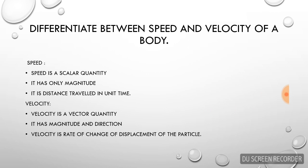Speed and velocity — what is the difference? Speed is a scalar quantity. For a scalar quantity, only magnitude is there, no direction. Speed is defined as distance traveled in unit time. Velocity is a vector quantity, so it has both magnitude and direction. Velocity is the rate of change of displacement of the particle.